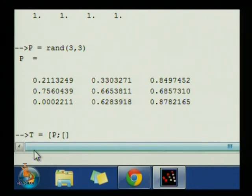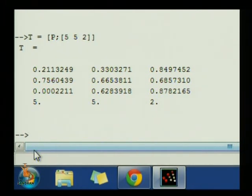To append elements inside the matrix, what I will do is, my matrix name is P. I will define my new matrix called T equals to square bracket P, semi-column. Now, it will append the elements to the P matrix. You have to assign the elements in the square bracket. I am going to assign the elements, let's say, 5, 5, 2. And the outer square bracket has to be closed, enter.